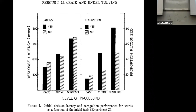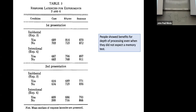So this works against the modal model — the idea that you need to rehearse things to learn them. What Craik and Tulving are showing is that this level of processing effect is enough to encode, retain, and recall information later on — even when you're not trying to learn the words. The advantage for deeper processing and elaborative encoding seems to exist even without deliberate memorization.